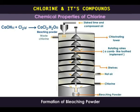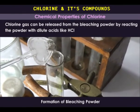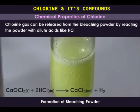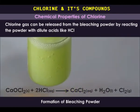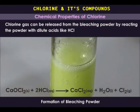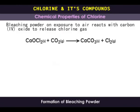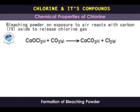Bleaching powder contains about 36% available chlorine. Chlorine is released by reacting the powder with dilute acids like nitric acid or hydrochloric acid. When exposed to the atmosphere, bleaching powder smells strongly of chlorine and deteriorates quickly, because it reacts with atmospheric carbon dioxide, releasing chlorine.